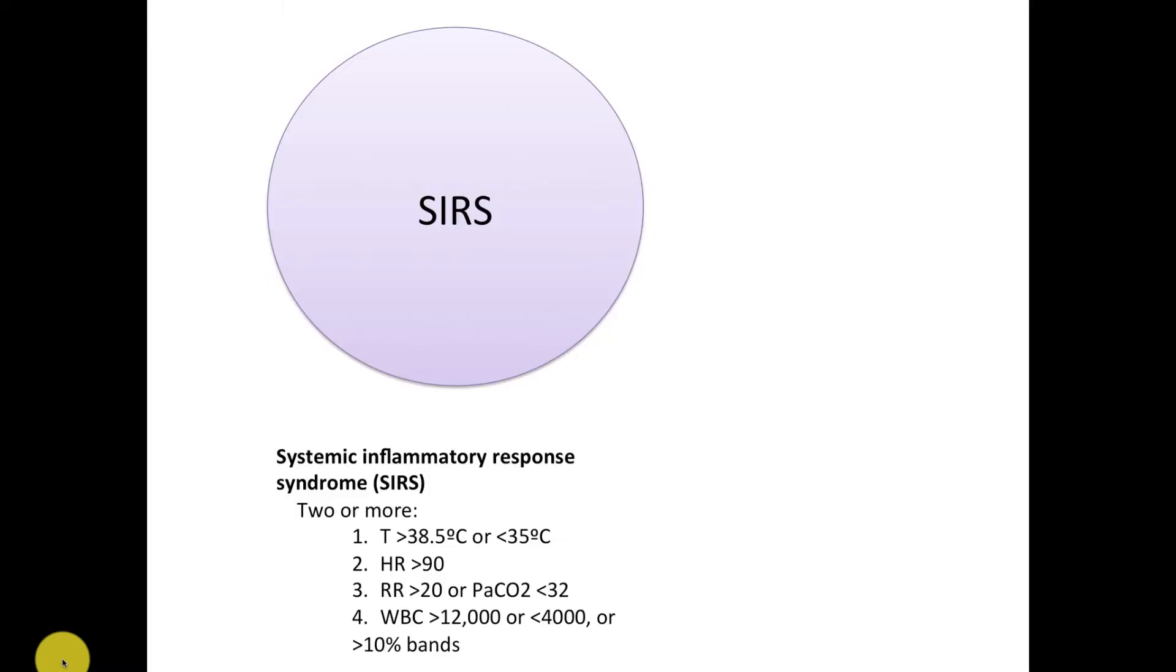But probably more strictly, it's defined as the combination of SIRS and infection. So what is SIRS? SIRS is the systemic inflammatory response syndrome defined as having temperature instability, heart rate or respiratory instability, or signs of inflammation on a white blood cell count.